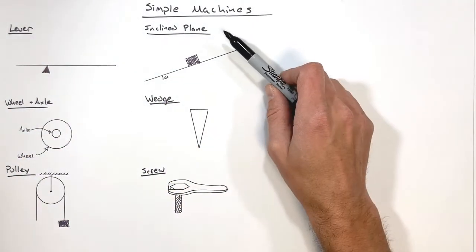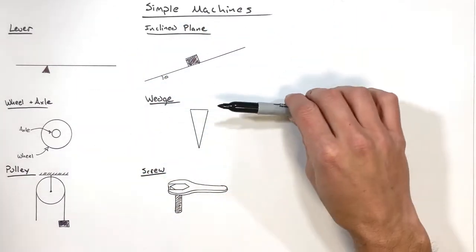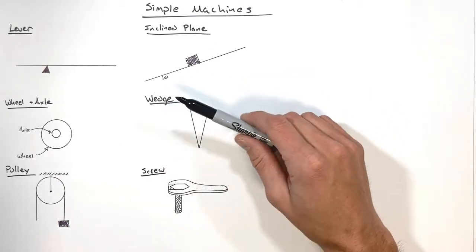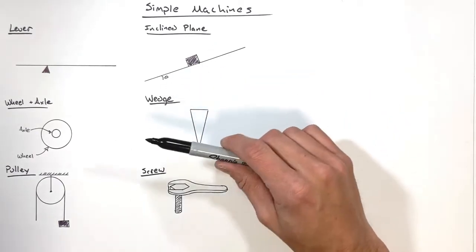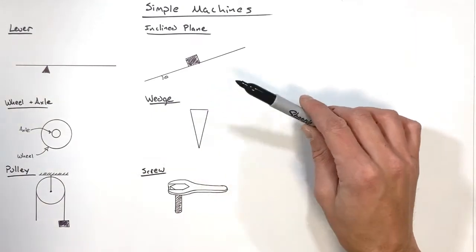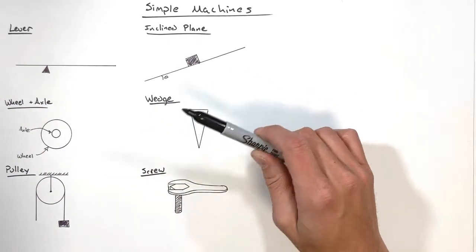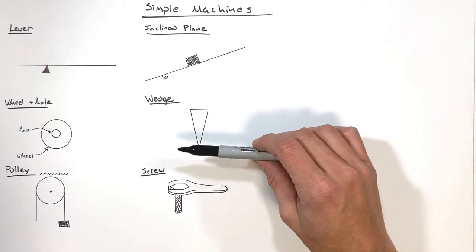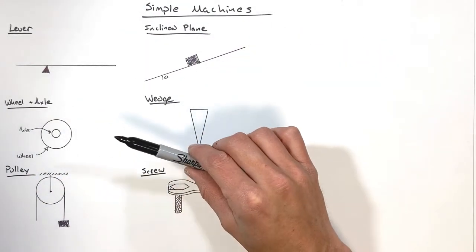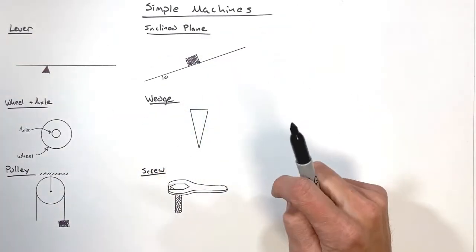The real purpose of a simple machine is to allow work to be done more efficiently than it normally would by simply lifting a box or pushing on some object. Each of these simple machines performs its own functions and somehow makes that work easier. We're going to take a look at simple machines in general and then at each individual simple machine.